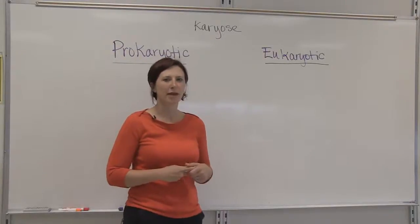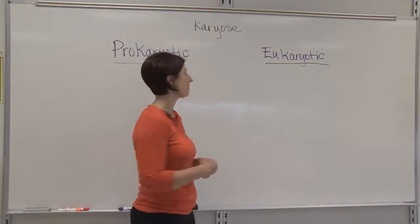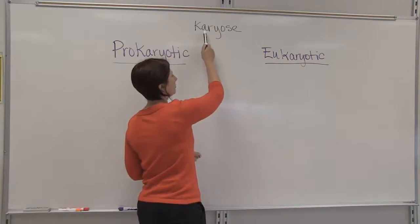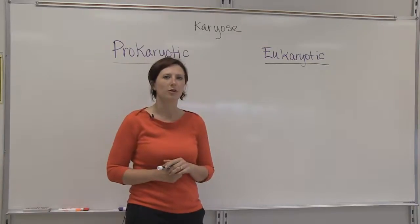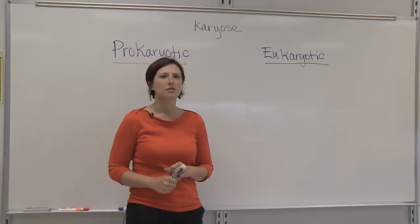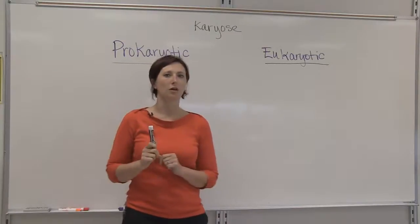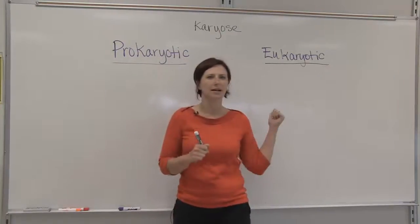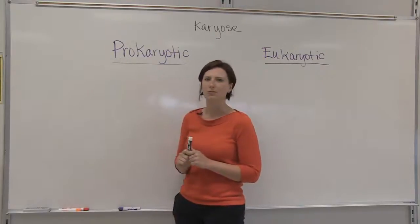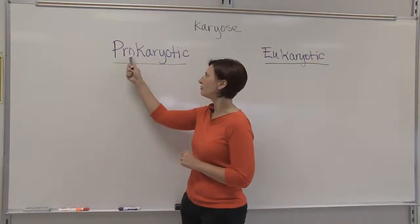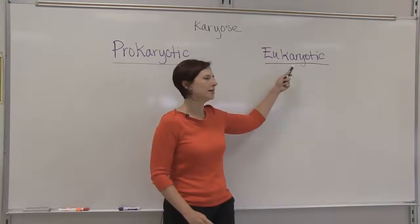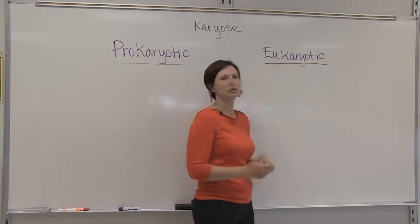We're going to talk a little bit about prokaryotic and eukaryotic cells. Both of these words come from Latin, and the root karyos in Latin means kernel, and in biology we use that word to refer to the nucleus. So that gives us a little bit of a clue as to the differences between prokaryotic and eukaryotic cells. Because pro means before, this word refers to before a nucleus, and eu means true or good, this word refers to a true nucleus.